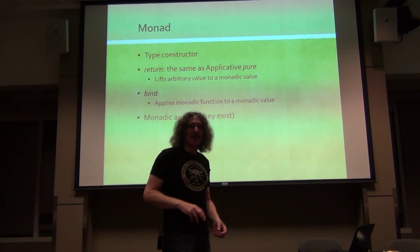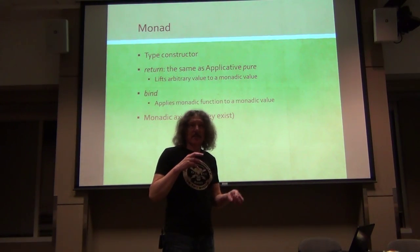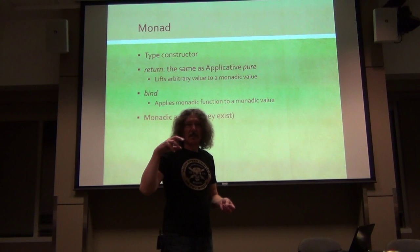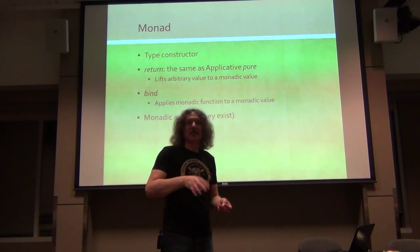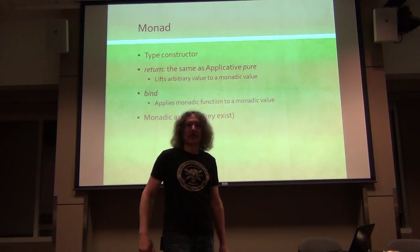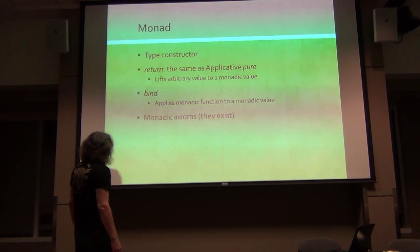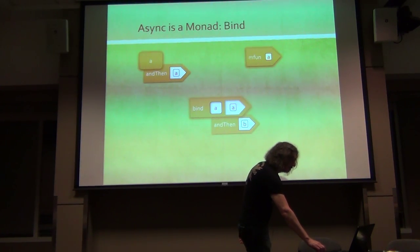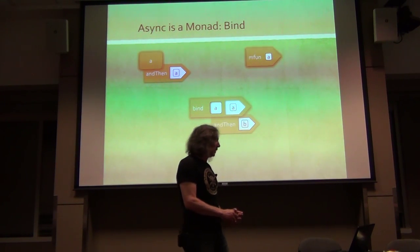Return takes a value and has a well-defined way of lifting it to produce a monadic value. A monadic function is a more arbitrary thing - it takes a value and produces a monadic value in a non-trivial way. There are monadic axioms.